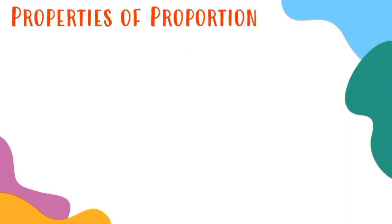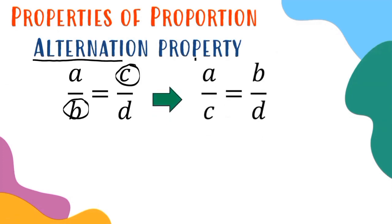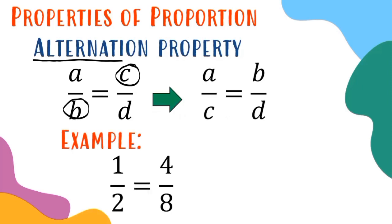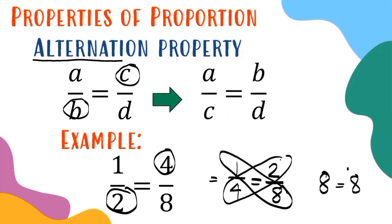The second property is the alternation property. Given a over b equals c over d, you interchange the positions of b and c, resulting in a over c equals b over d. Applying this to 1/2 equals 4/8, you get 1/4 equals 2/8. Checking by cross multiplication, the result is still the same.